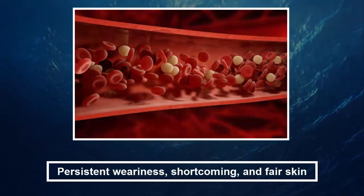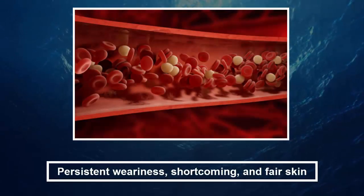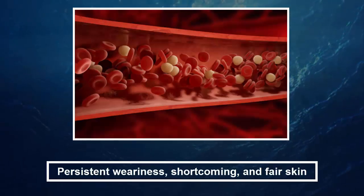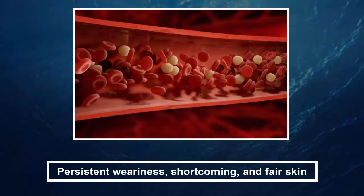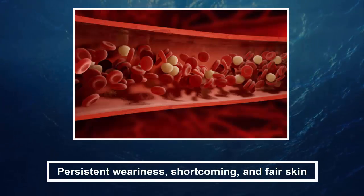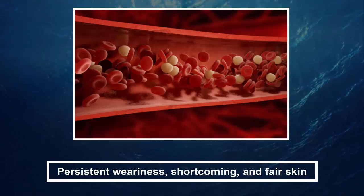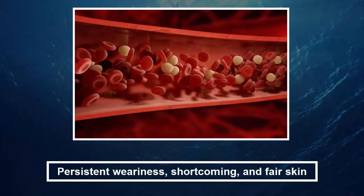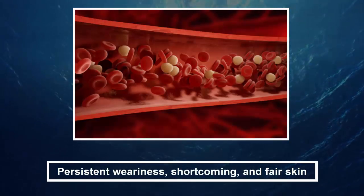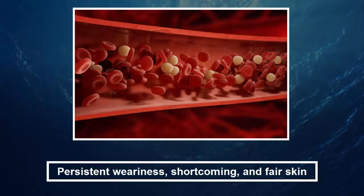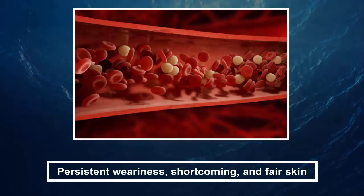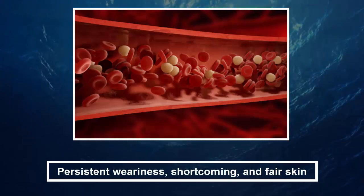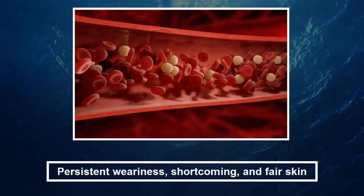4. Persistent fatigue, weakness, and pale skin. WebMD clarifies that our bodies require red blood cells to carry oxygen throughout our bodies and to our muscle tissue. Folate is responsible for making red blood cells, so when we are deficient in folate we simply don't have enough red blood cells to maintain our normal physical activity. This is called folate deficiency anemia.